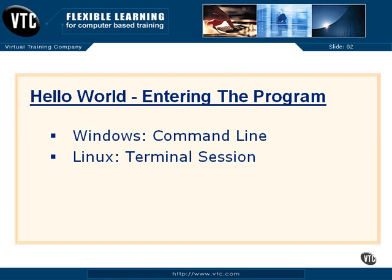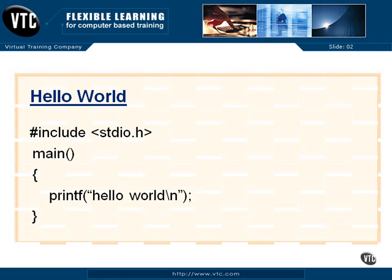Let's go down and take a look at the program first. We have pound include, a space, a less than, stdio.h, a greater than. On the next line, we have the word main, open and close parentheses, and then we have a left brace that you see there between main and printf.